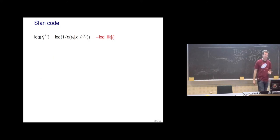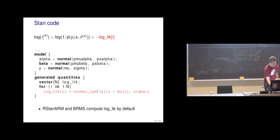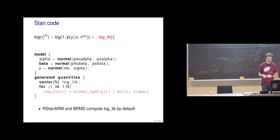Instead of computing these ratios directly, we compute them as log ratios. In Stan code, in the generated quantities block, we add a computation like: log_lik[i] = normal_lpdf(y[i] | mu[i], sigma). RStan and brms compute these log-likelihoods — they actually compute them outside of Stan code currently, in R — in a way that then the LOO package can automatically use them. Pareto-smoothed importance sampling leave-one-out works well when removing something doesn't change the posterior too much. If it changes too much, we get the diagnostic saying there's a problem.